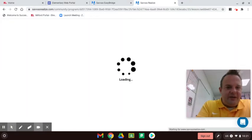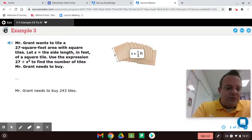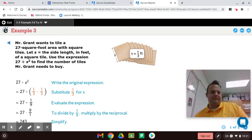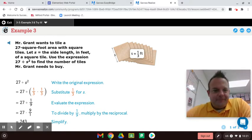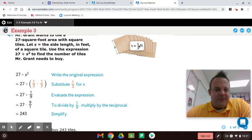Example three. Here we're tiling floor. This reminds me of when we redid our bathroom. So 27 square. Well, we'll read it for completion sake. Mr. Grant wants to tile a 27 square foot area with square tiles. Let s equal the side length in feet of a square tile. Use the expression 27 divided by s squared to find the number of tiles Mr. Grant needs to buy. Okay, so step number one, algebraic expression. We insert what the variable equals, which is one third. It's called substitute one third for s.